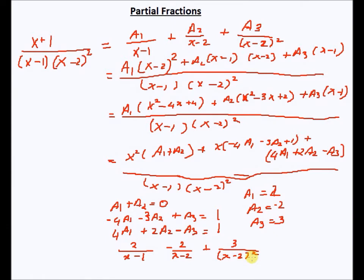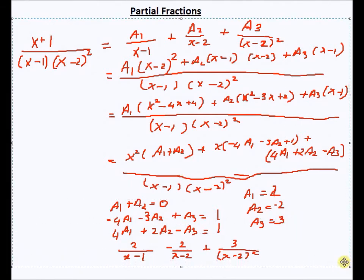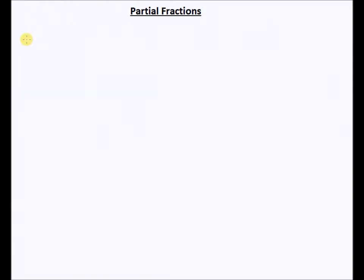There is a third form as well, which we will cover as the final example. This third example will contain a degree-two term in the denominator which cannot be factorized, because that quadratic expression will not have real roots. Let me write down the problem: the numerator is (x+2), and the denominator is (x+1) times (x²+x+4).